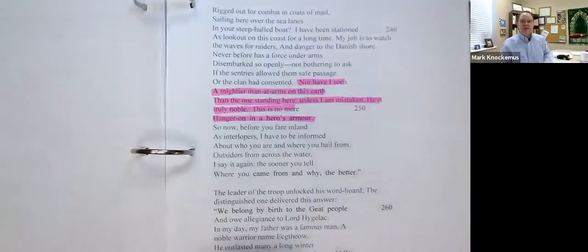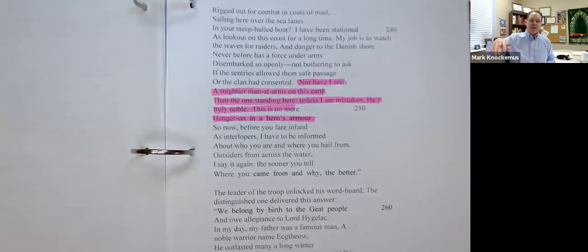And here we see the words from the sentry who is there on the seashore whose job is to watch. He's kind of a lookout. And if anything's going on, he's got to either run for help or stop, see what's going on. And these are his words.